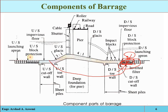The downstream block protection is similar to the upstream block protection — layers of stones or filter bedding material are placed to protect the downstream face of the barrage from wave erosion. The downstream launching apron is similar to the upstream launching apron — layers of large stones are placed at the downstream portion of the barrage so they are not washed away by flowing water, protecting the downstream portion from erosive forces.